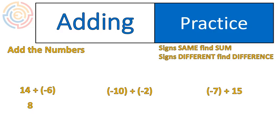The next question, negative 10 plus negative 2, that will give us negative 12. This is an example where the signs are the same. You find the sum. Add the numbers together and keep the sign.